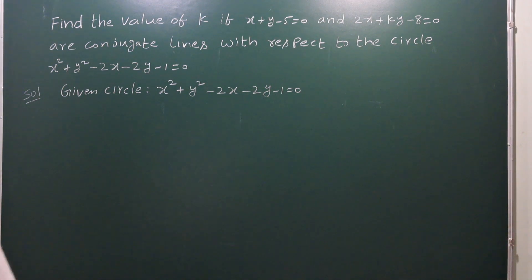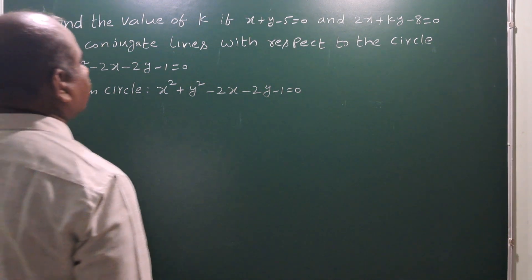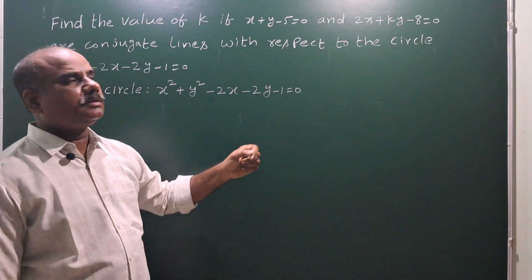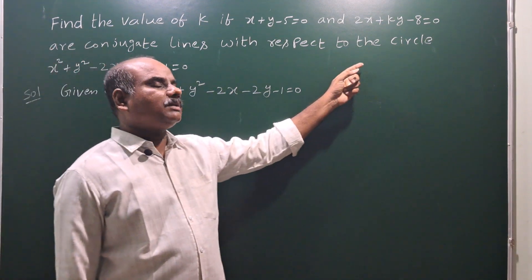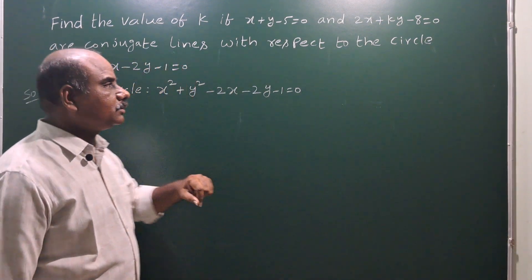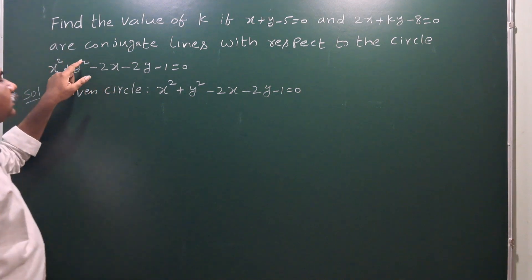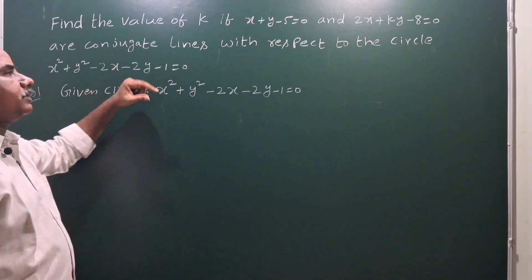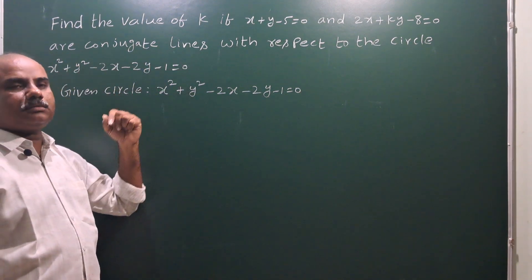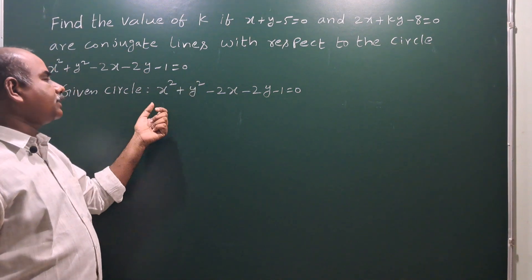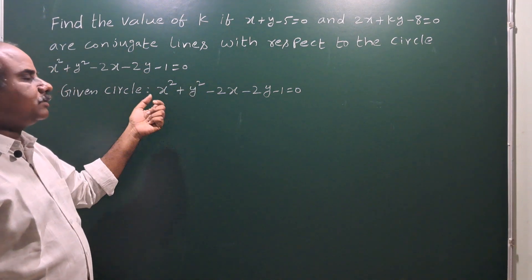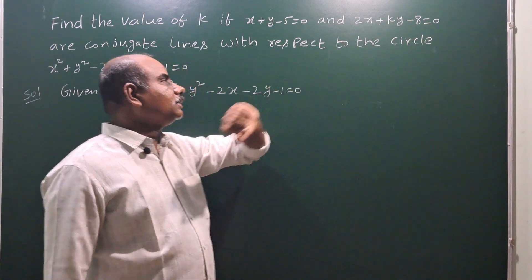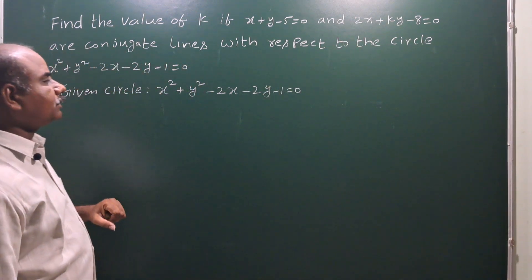Next problem: find the value of k if x plus y minus 5 is equal to 0 and 2x plus ky minus 8 is equal to 0 are conjugate lines with respect to the circle. The two lines are conjugate lines with respect to the circle and we have to find the value of k, which is the coefficient of y.